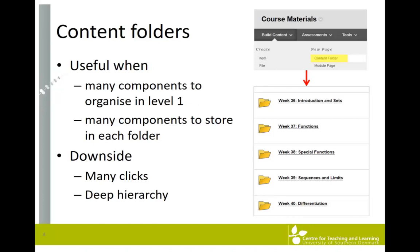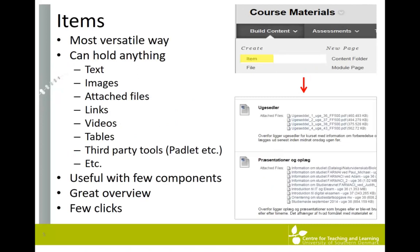Items are a very user-friendly way of adding materials to your Blackboard course. Items are very versatile in that they can contain text, images, links, videos, attached files, and so on. If you have few components to upload, items are ideal and can work as a sort of open folder. This minimizes the number of clicks to retrieve information and gives your students a great overview and easy access.